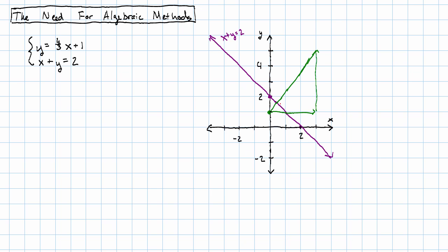Our lines intersect at this point here. We might guess that that's something like x equals a half, y equals one and a half. That looks kind of like where it might be in our picture. And a half plus one and a half does equal two.